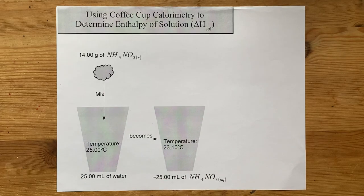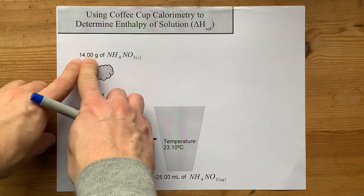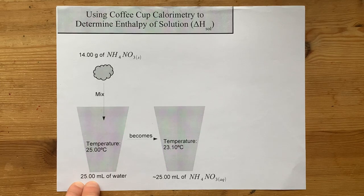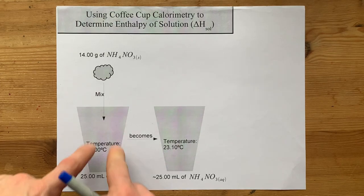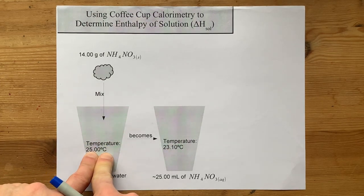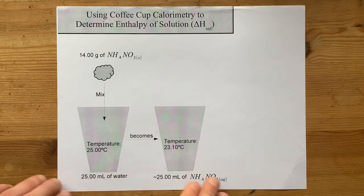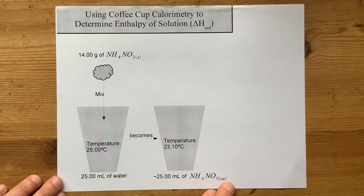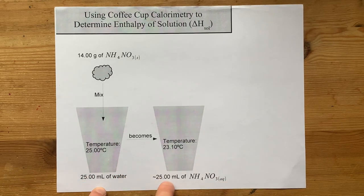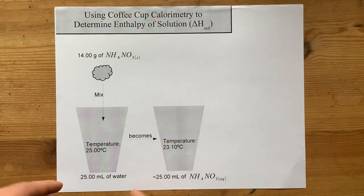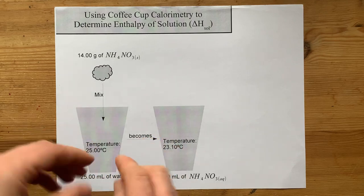We're going to run through one of those calculations now. We have 14 grams of ammonium nitrate being dissolved in 25 milliliters of water. The initial temperature is 25 degrees Celsius, and after the mixing, the temperature has gone down to 23.10 degrees Celsius. It's still about 25 milliliters of that solution. The volume would have changed a little, but it was 25 milliliters of water to start with.